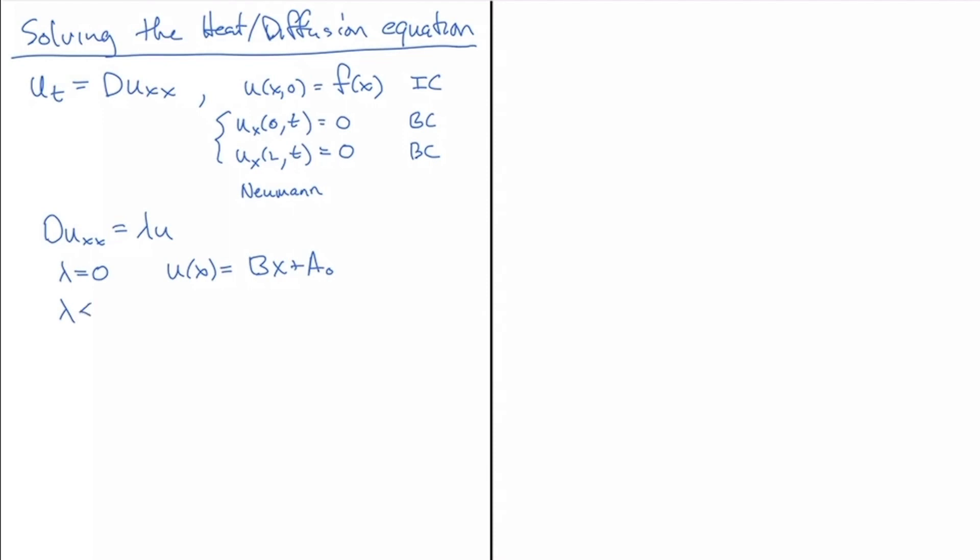And then what we did find useful was the eigenvectors associated with negative eigenvalues. And there we found that u(x) equal sine of square root of minus lambda over d times x, and v(x) equal cosine of the same.